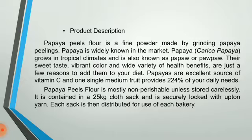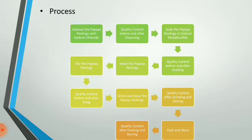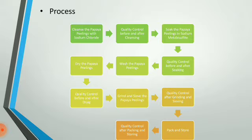Also clearly state how your product was created. In the papaya peel flour example, the process includes: cleansing the papaya peelings with sodium chloride; quality control before and after cleansing; soaking in sodium metabisulfite; quality control before and after soaking; washing the peelings; drying; quality control before and after drying; grinding and sieving; quality control after grinding and sieving; and finally packing and storing with quality control after packing.